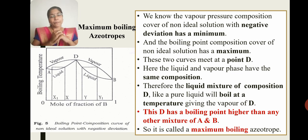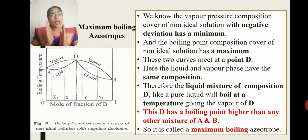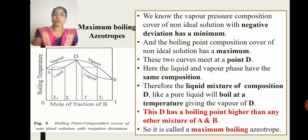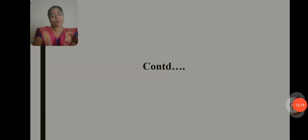So what do we learn from this? Azeotropic mixtures are of two types: minimum boiling azeotrope and maximum boiling azeotrope. This is what we have learned in this class. We will see the rest of the content in the next class.